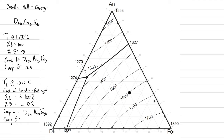The composition of the liquid is the point on this graph relative to our three end members. It's going to be diopside 24, forsterite 38, and anorthite 38. The composition of the solid — we're still in the domain of forsterite, so it has to be forsterite 100. Take a look at the textbook if this stumps you, but I hope it's making sense.